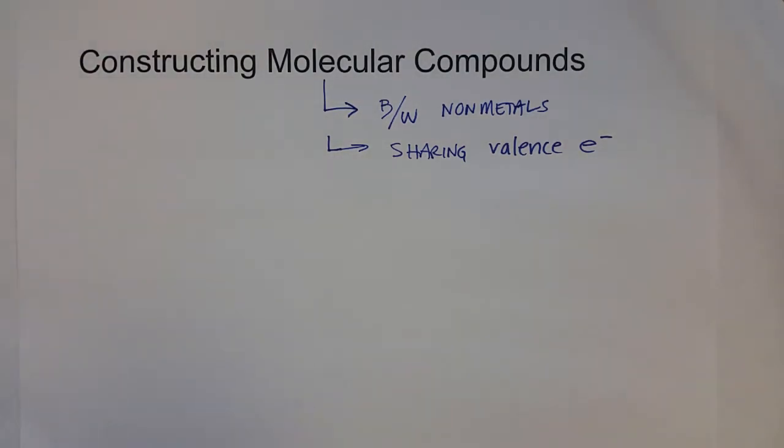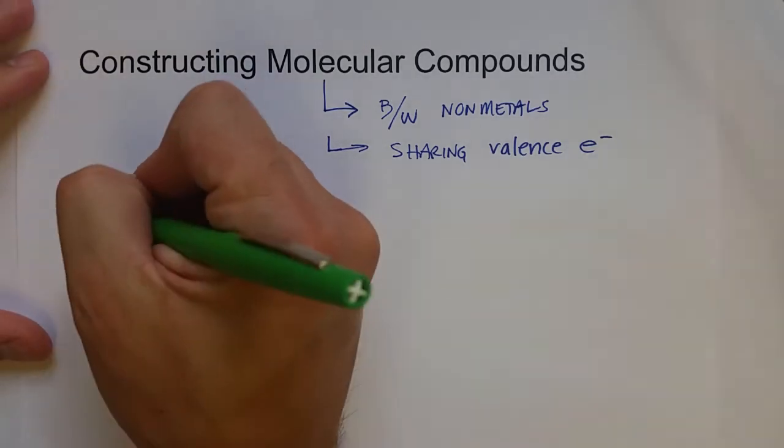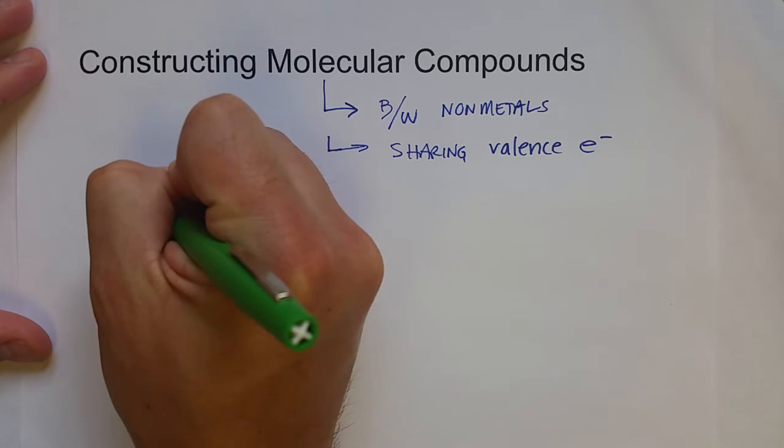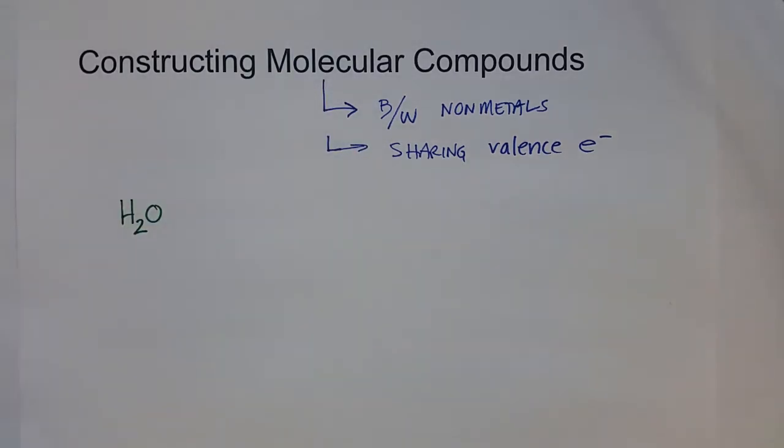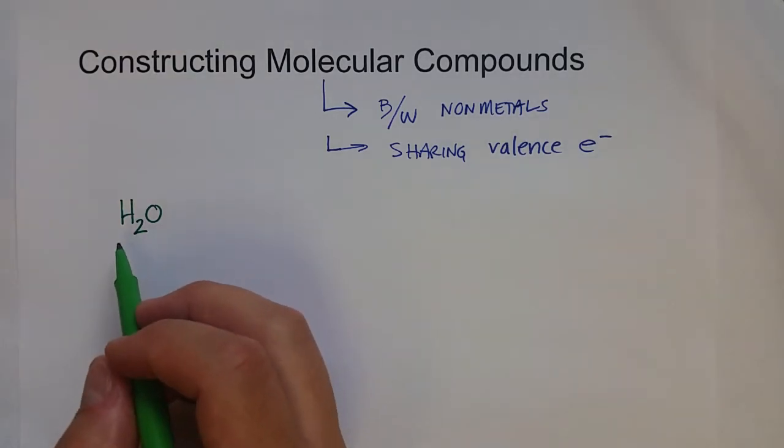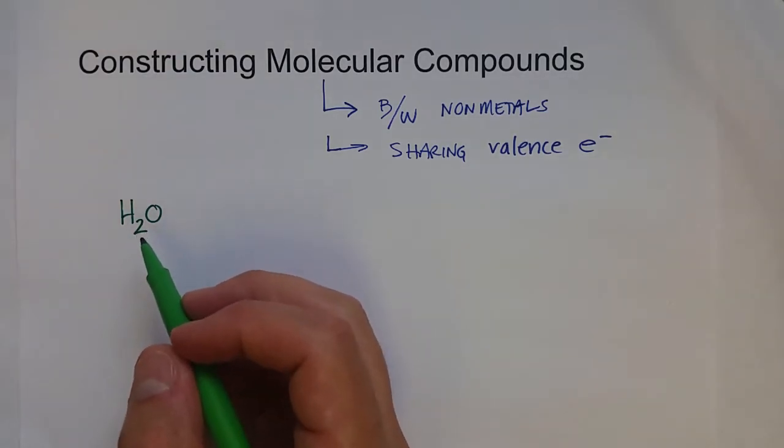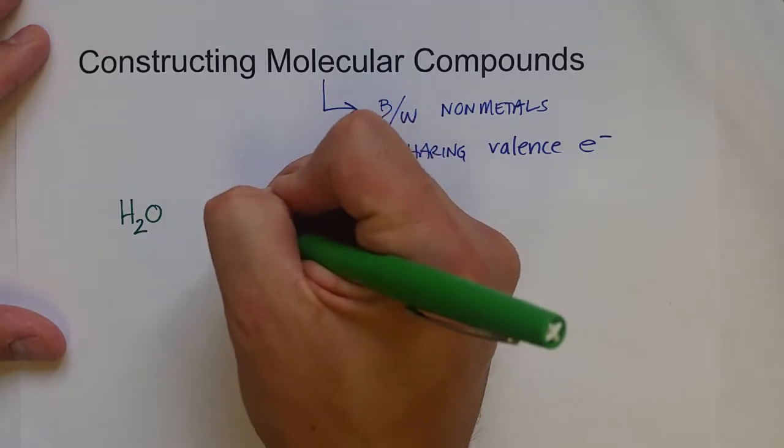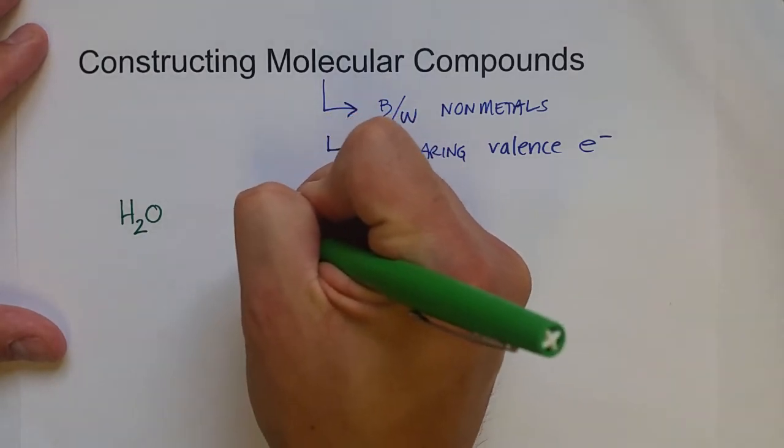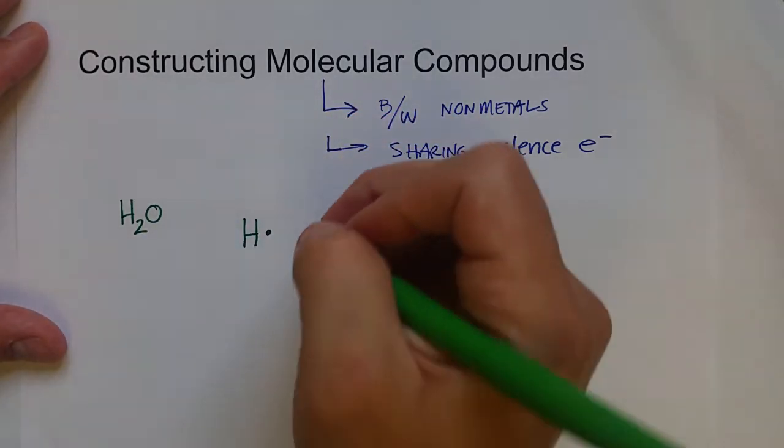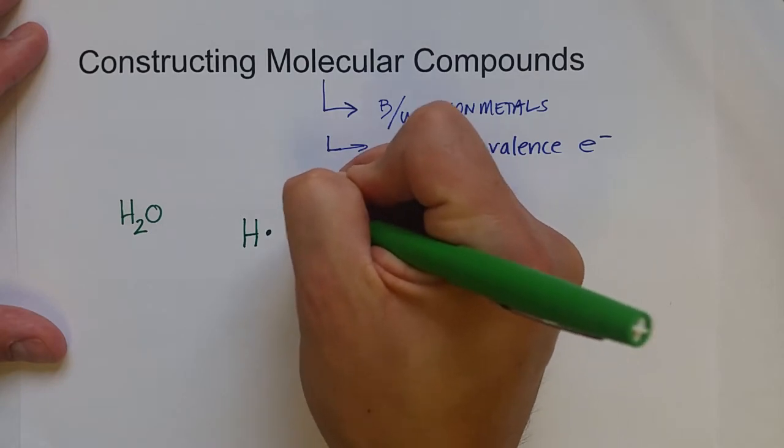Let's think about a simple molecule like water. Water is H2O. Why is it H2O and not some other formula? Why isn't it H3O or HO2? That is because hydrogen has one valence electron and oxygen has six.